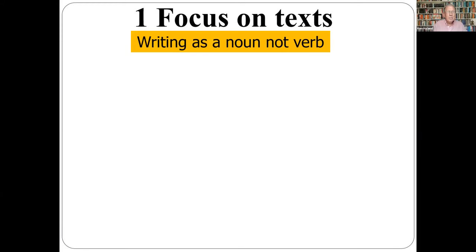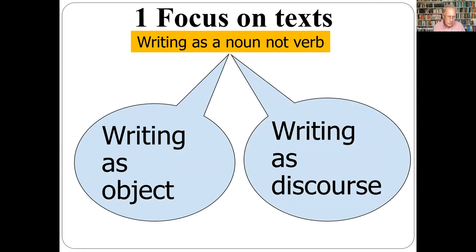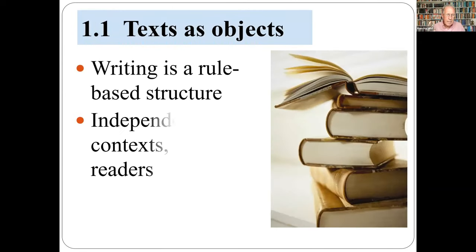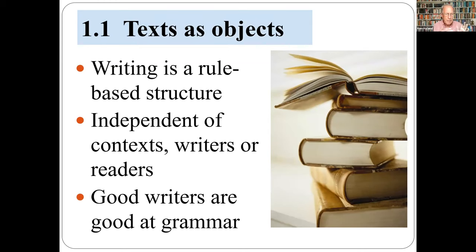Text-oriented research sees writing as an outcome — the words on a page or screen. This is writing as a noun, not a verb. We can see texts either as objects or as discourse. Seeing texts as objects means understanding writing as the application of rules — writing is a thing, independent of any particular writer, reader, or context. Learning to become a good writer is largely a matter of knowing grammar. This is what we often call a product approach.